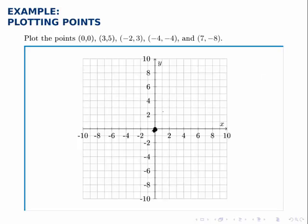Then for the next point, (3,5), we go 3 units to the right, again starting at the origin, 3 steps to the right, and then 5 steps up. So that's the point (3,5).